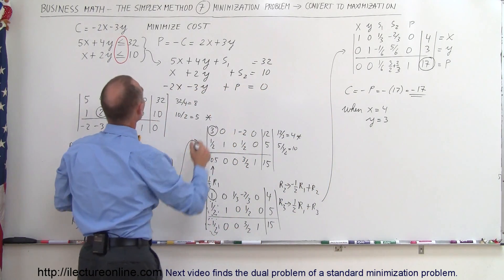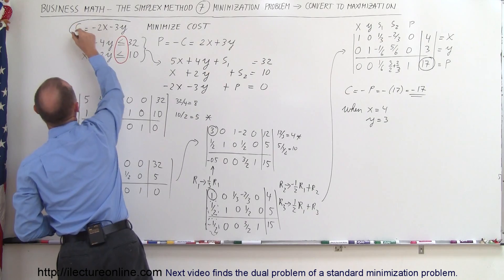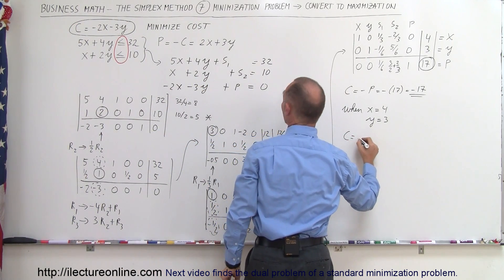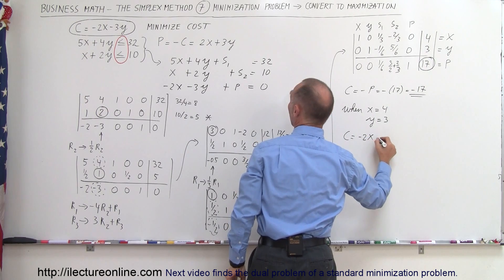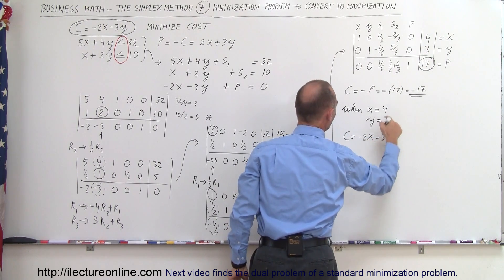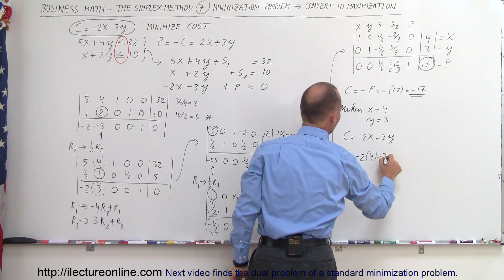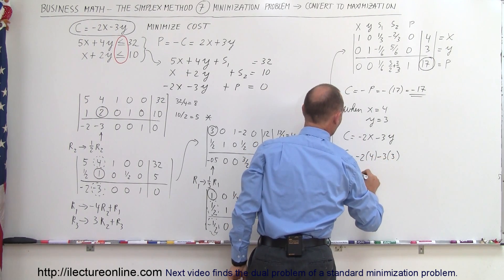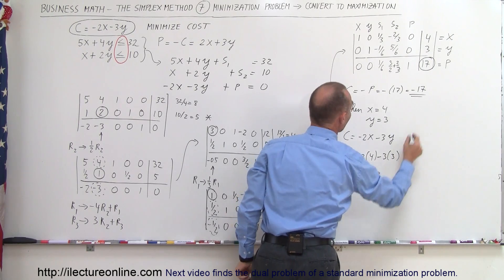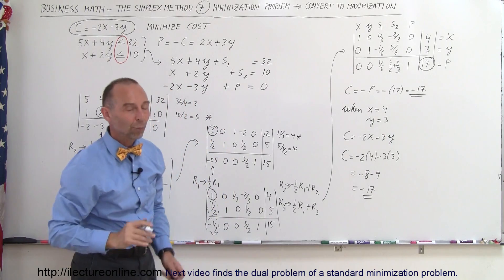To check that, we take our cost equation and plug in those values. Since cost equals minus 2x minus 3y, and x equals 4 and y equals 3, then cost equals minus 2 times 4, minus 3 times 3, which equals minus 8 minus 9, which is minus 17. And sure enough, that matches. So we know we have the right answer.